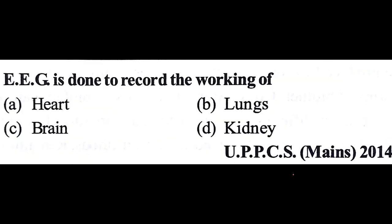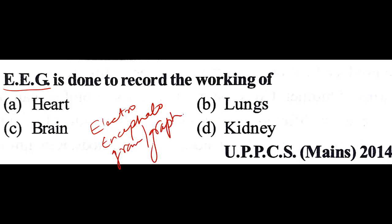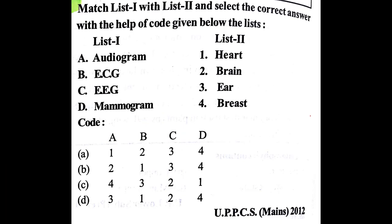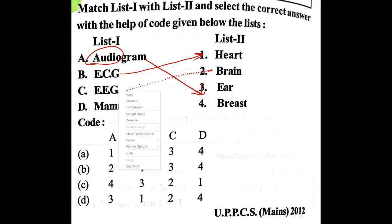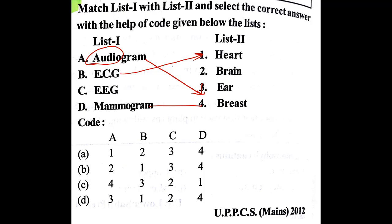The full form of EEG is electroencephalogram — graph is the result, gram is the machine — and it is used to record the working of the brain. For list matching: audiogram is linked with ear, ECG (electrocardiograph) is for heart, EEG (electroencephalogram) is for brain, and mammogram is for breast cancer detection. The answer sequence is three, one, two, four — given in option T.